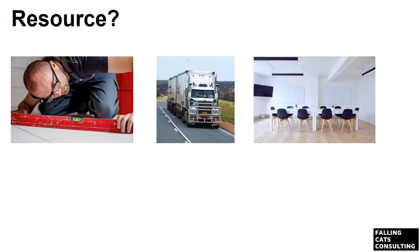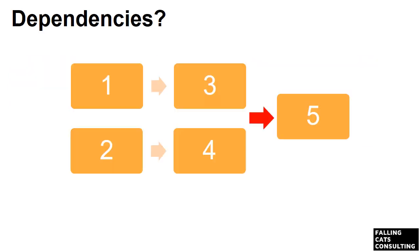Resources are required to carry out the project tasks. Resources are usually people, but they can be things like equipment, facilities, or anything else capable of definition required for the project. Dependencies are the relationships of the preceding tasks to the succeeding tasks. Tasks may have multiple preceding tasks and/or multiple succeeding tasks. The most common dependency relationship is a finish-to-start relationship. In this case, task 3 can't start until task 1 is finished.